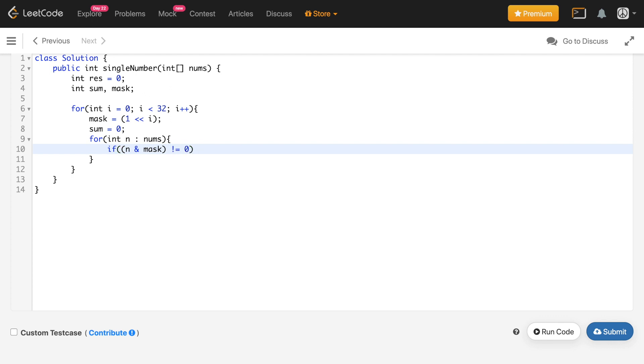I know that this current bit, this current bit i is set in the number n. So we will simply increment sum by 1.